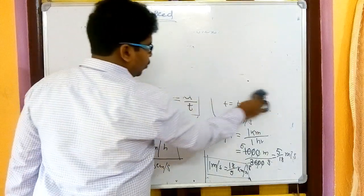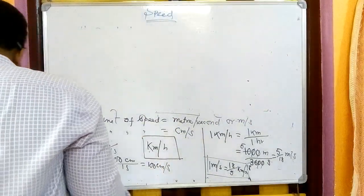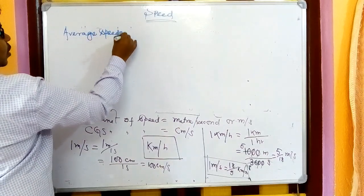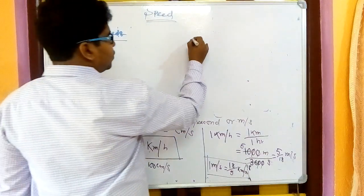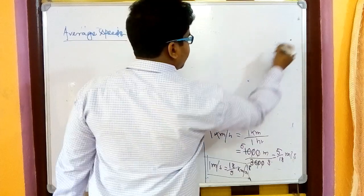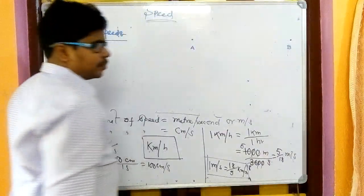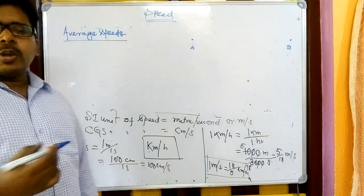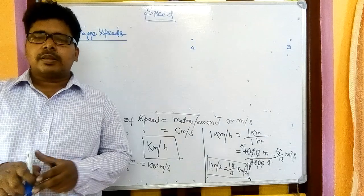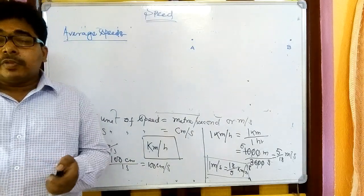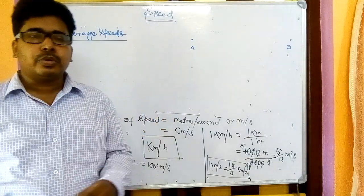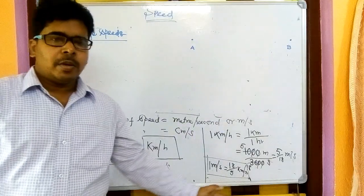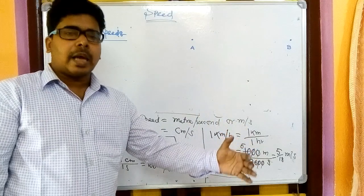Now we'll cover one smaller topic: average speed. Assume a body starts from point A and has to reach point B, but it cannot move directly. Like a school bus — it stops at certain points, drops students, then moves further. So it covers different distances in different time intervals.